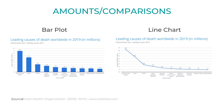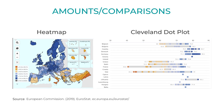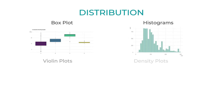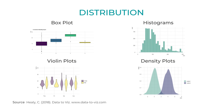Amounts or comparisons normally utilize bar plots and lines, but other less known options are heat maps and Cleveland dot plots. Compositions or proportions use many types of geometries — the most recognized is a pie geometry. However, this geometry may not be the most effective when displaying slight data differences. Alternatives to the pie geometry include stacked or clustered bar plots, stacked density plots, mosaic plots, and tree maps. Distribution data types typically employ box plots, or other examples such as histograms, violin plots, and density plots.